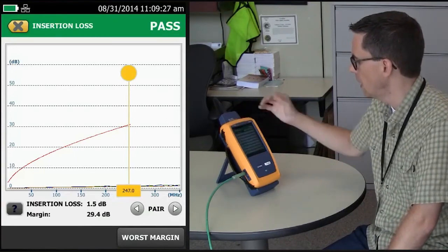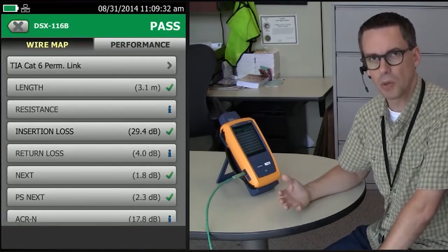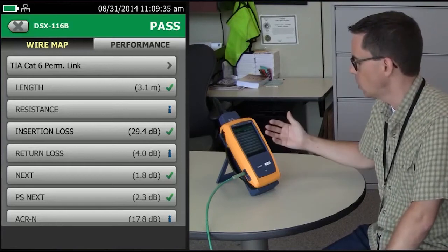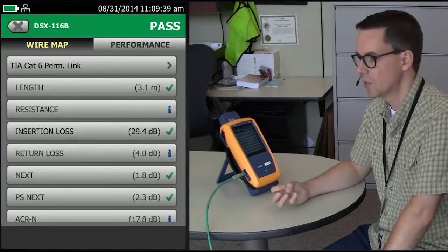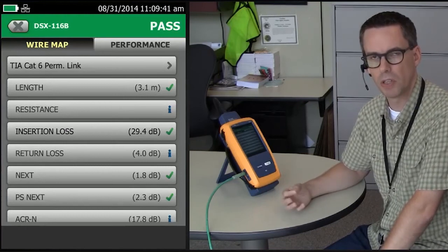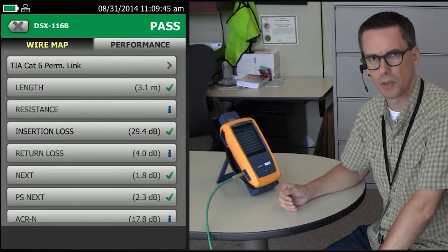So again, if the link is short enough, you can't actually fail return loss. And that's okay from an application point of view, because on a short link, if you do have a poor return loss, it's okay because you still have a very high-strength signal coming out and into the receiver at the other end.